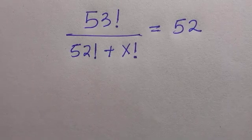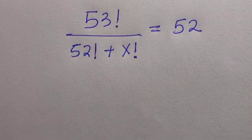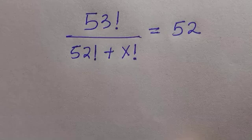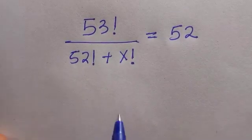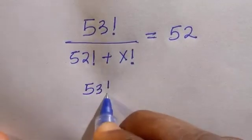Welcome to another video. Let's solve this problem: 53 factorial divided by 52 factorial plus x factorial equals 52, and you want to solve for the value of x. So we have 53 factorial.